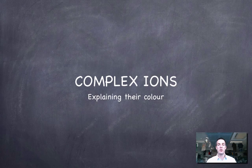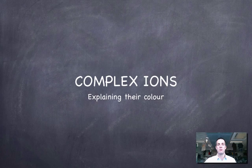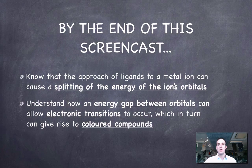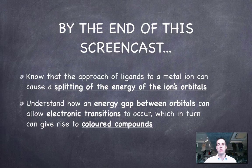If you haven't watched the previous film or don't remember some of the key terms, I would recommend you go back to that before watching this one. But hopefully by the end of this film, you'll be able to understand that when ligands approach a central ion, they cause the energy of the orbitals in that ion to split. And once these orbitals have split, electrons can move from one orbital to another, in other words they can make transitions, and in doing so they can absorb light and cause these compounds to be coloured.